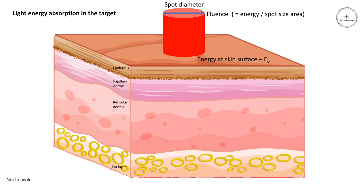Some of this energy will be reflected in what's known as regular or Fresnel reflections. This can account for between 4 and 7% of the initial energy, so right away we've lost some of the energy that we want.